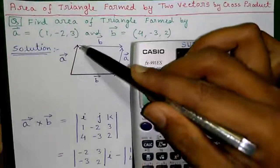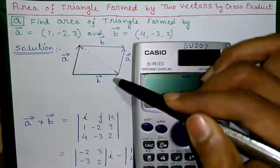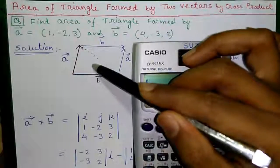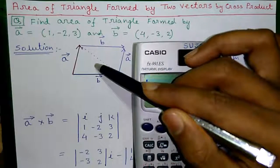So how does it work? Let's say this is vector A and this is vector B. So if we join the end points of two vectors we will get a triangle. We need to find out area of this triangle.